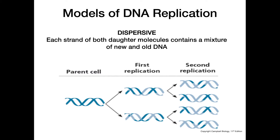The last model we'll look at is the dispersive model, which is another one that we figured out is not how it truly takes place. In the dispersive model, they thought that each strand of both daughter molecules contained a mixture of new and old DNA. Basically, they were thinking that the parent molecule broke up into different fragments and new molecules filled in the gaps between these fragments — but that's not really what happens.